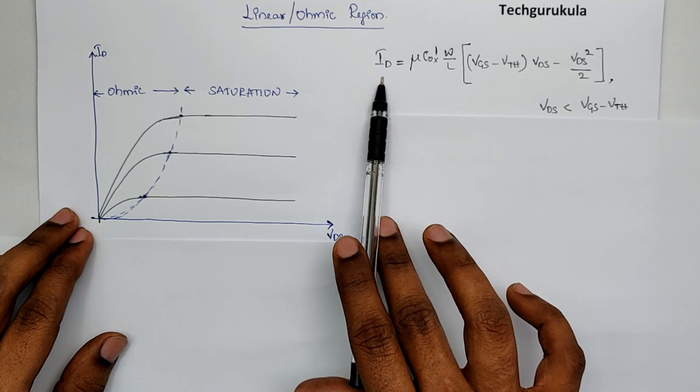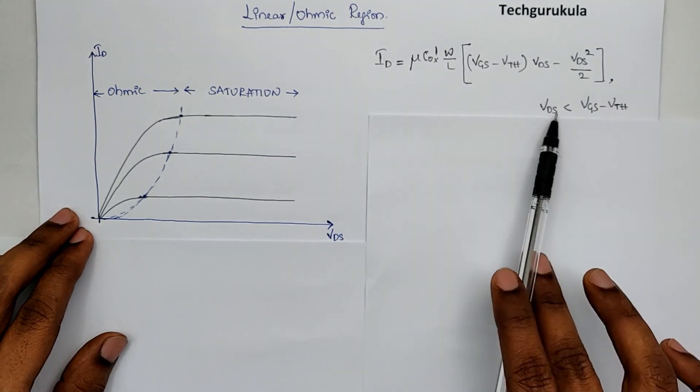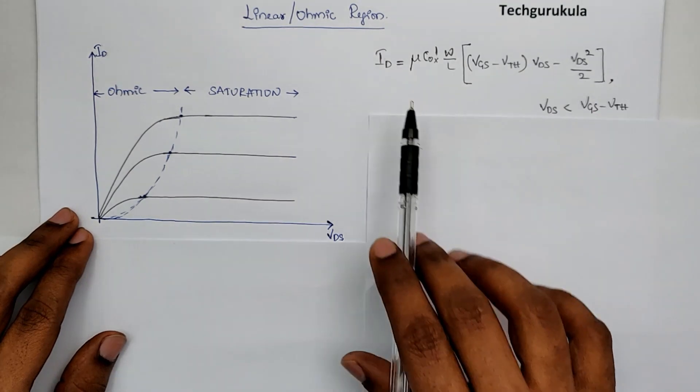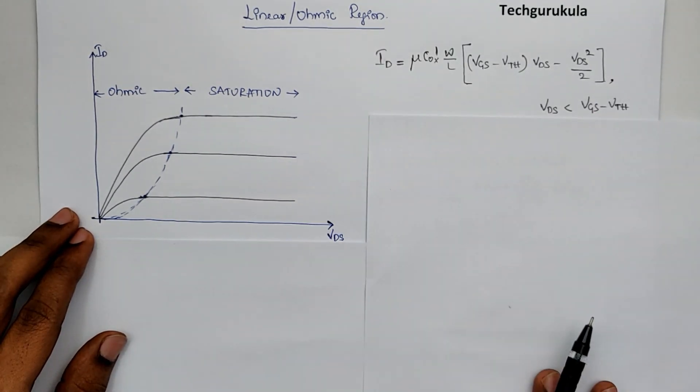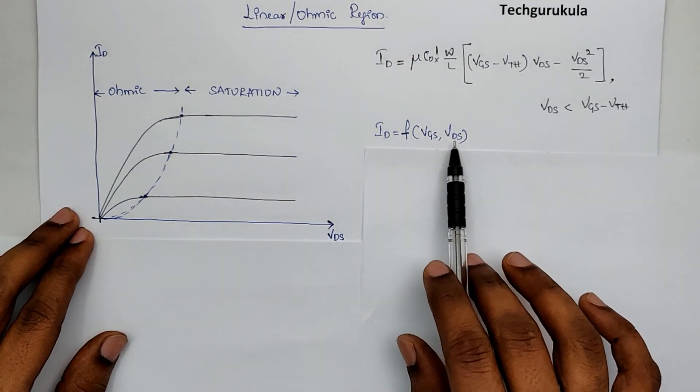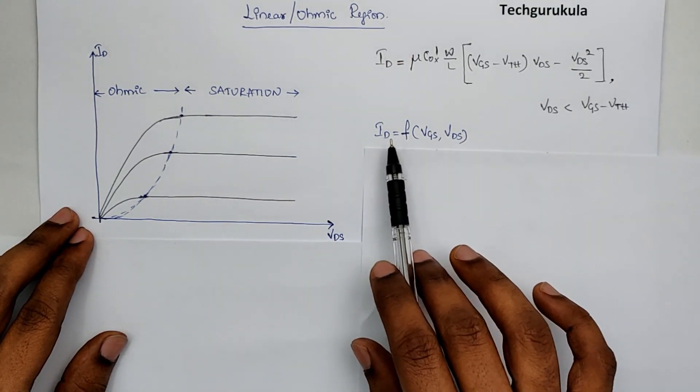In ohmic region, the current equation is given by this, where the condition is VDS is less than VGS minus VTH. We can write ID is equal to a function of VGS and VDS. These are the potentials in control with which ID can be changed.